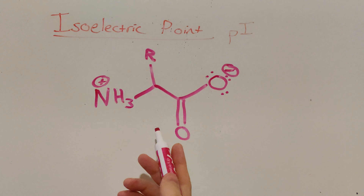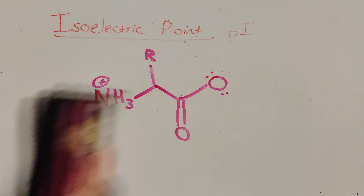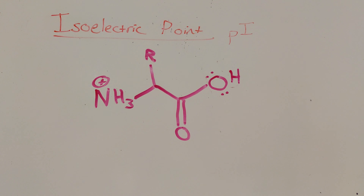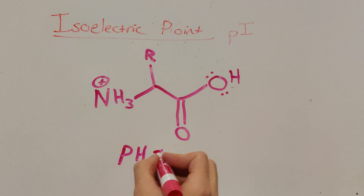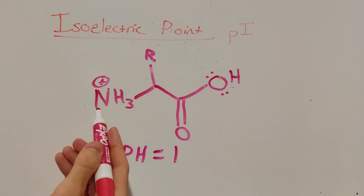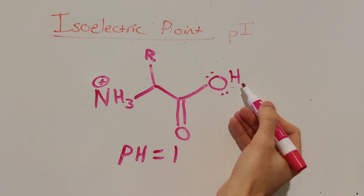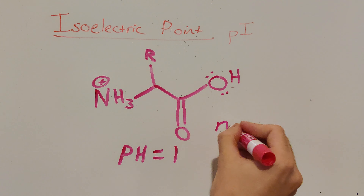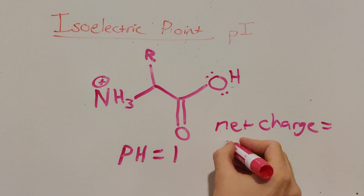Now imagine that you're in a pH environment of 1. We're going to leave our amine alone because it's already fully protonated. We also need to go and protonate our carboxylic acid functional group. What you see here would be indicative of what this amino acid would look like in a pH environment of 1 — the amine is fully protonated as well as the carboxylic acid. This means our net charge would be equal to plus one, because we have no negative charge from the carboxylic acid but have a positive charge from the amine.